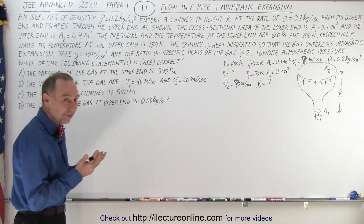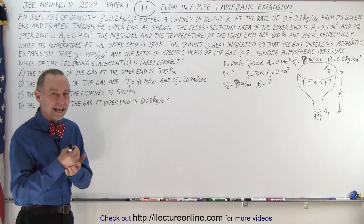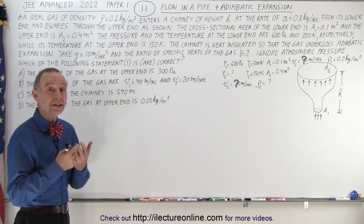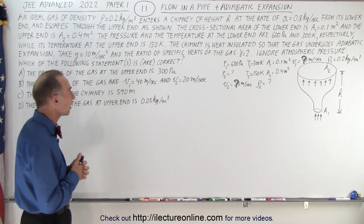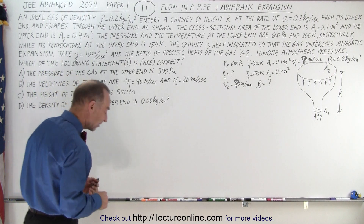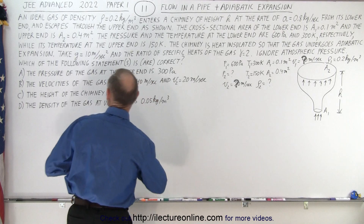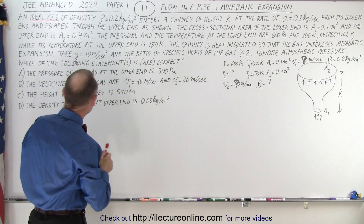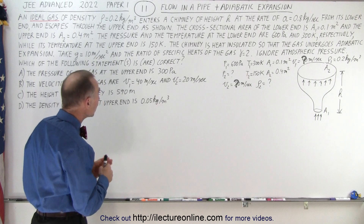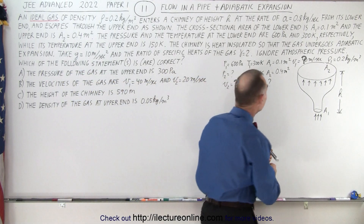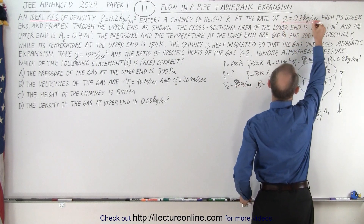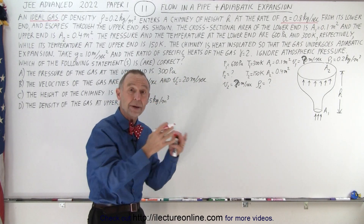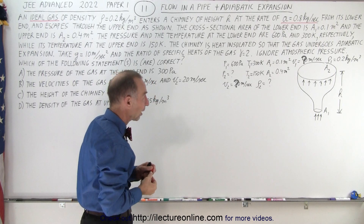It deals with flow in a pipe, and instead of a liquid, it's a gas flowing through a pipe. The gas goes through an adiabatic expansion, which means that the volume will not remain constant if the diameter changes — so that complicates things a bit. So it says an ideal gas, so we can use the ideal gas equation. It starts with a density of 0.2 kilograms per cubic meter entering a chimney of height H at the rate of 0.8 kilograms per second. This is the mass per unit time going through the pipe, and that remains constant — not the volume, but the mass.